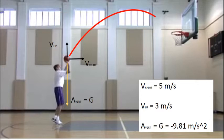This produces an acceleration in the downward direction of negative 9.81 meters per second squared. Now, in the scenario above, let's assume the person released the ball with an initial velocity to the right of 5 meters per second and a velocity upwards of 3 meters per second.